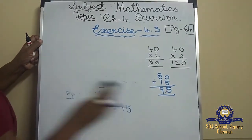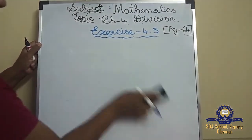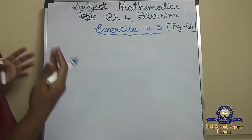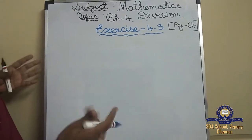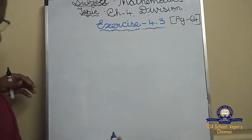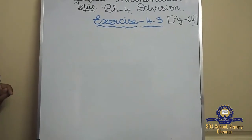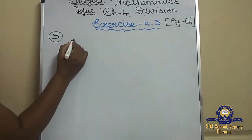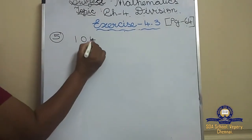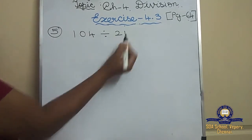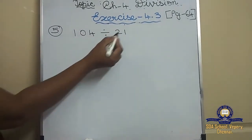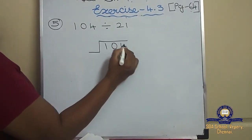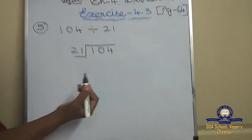Don't get confused. If you go on practicing in the rough note, it will be very easy. You should not just read — you have to go through and practice in the rough note; otherwise it is very hard. Fifth sum: 104 divided by 21. The dividend is 104 and the divisor is 21.